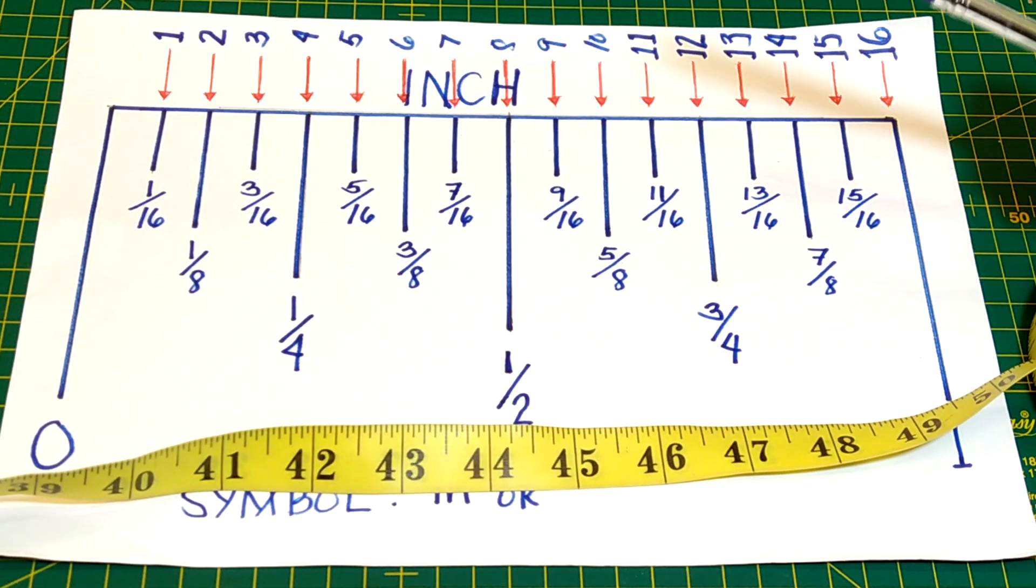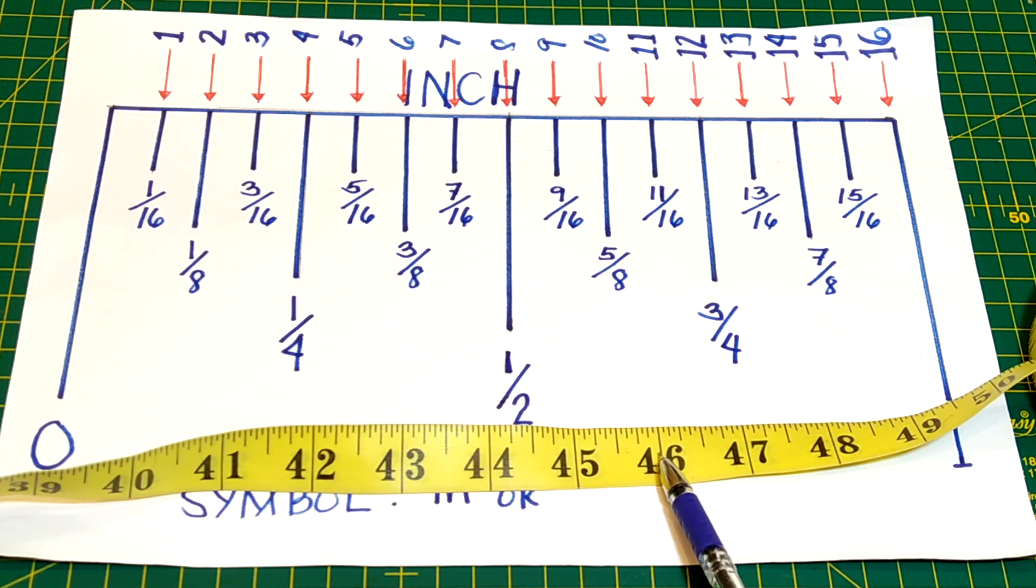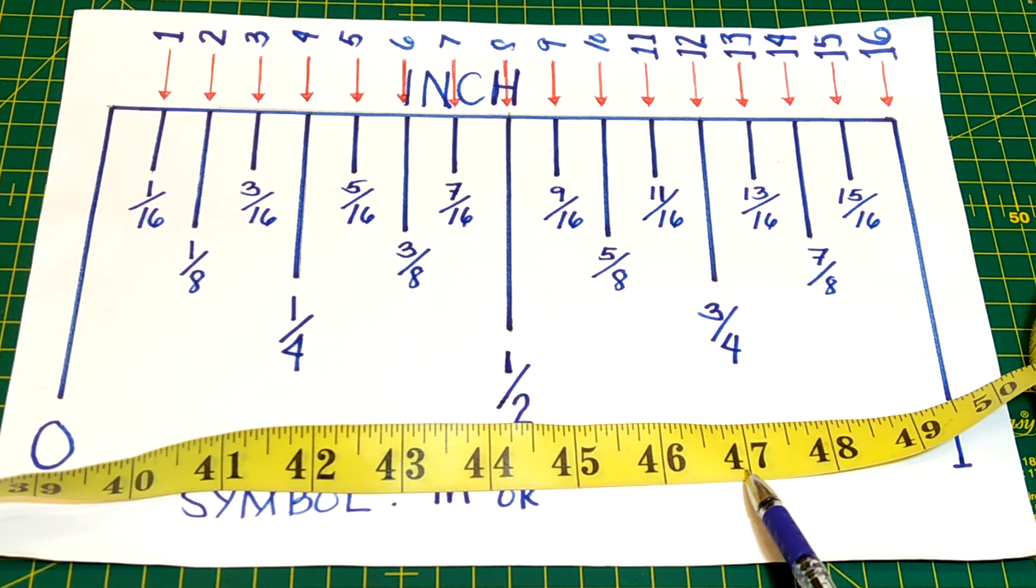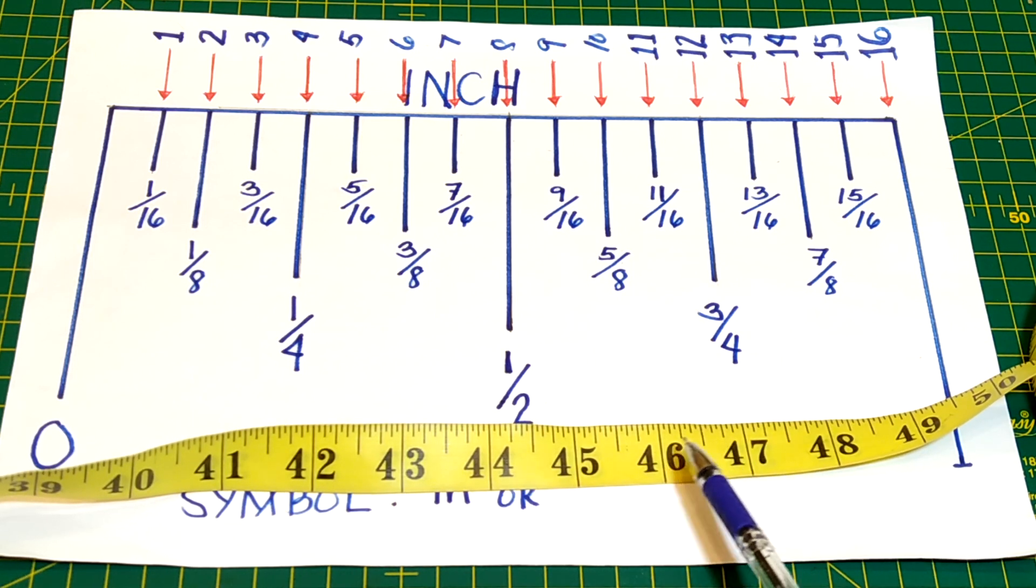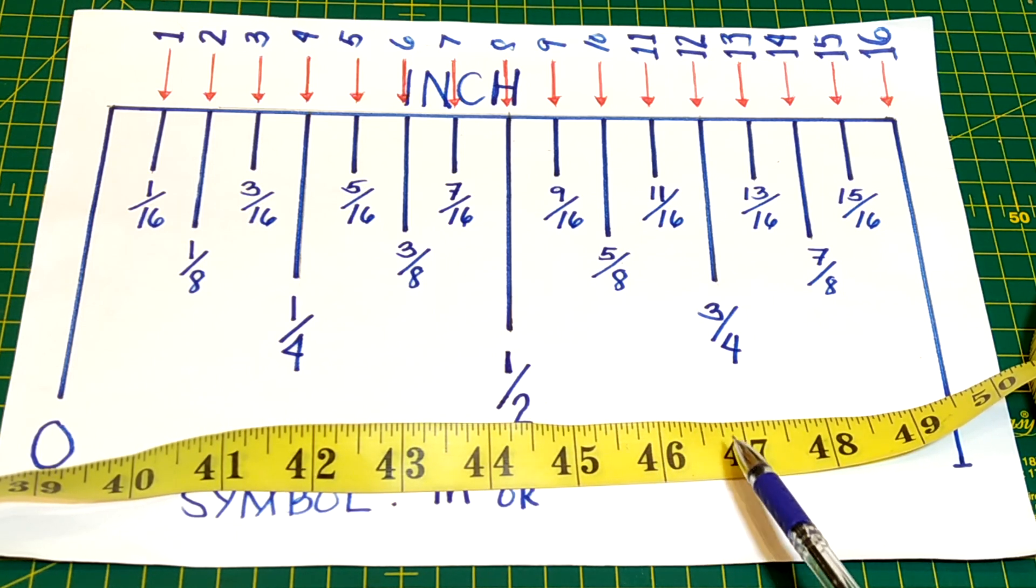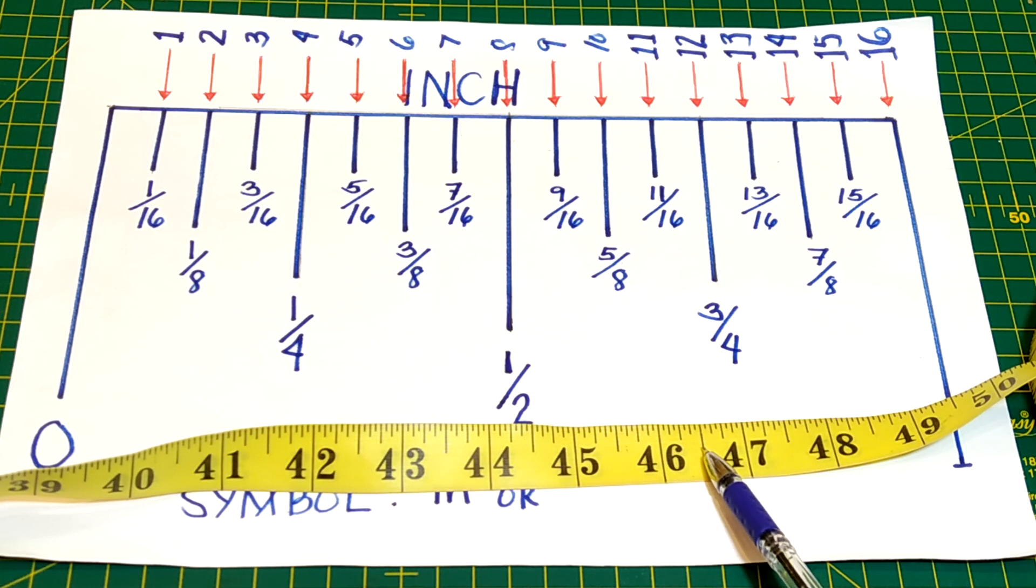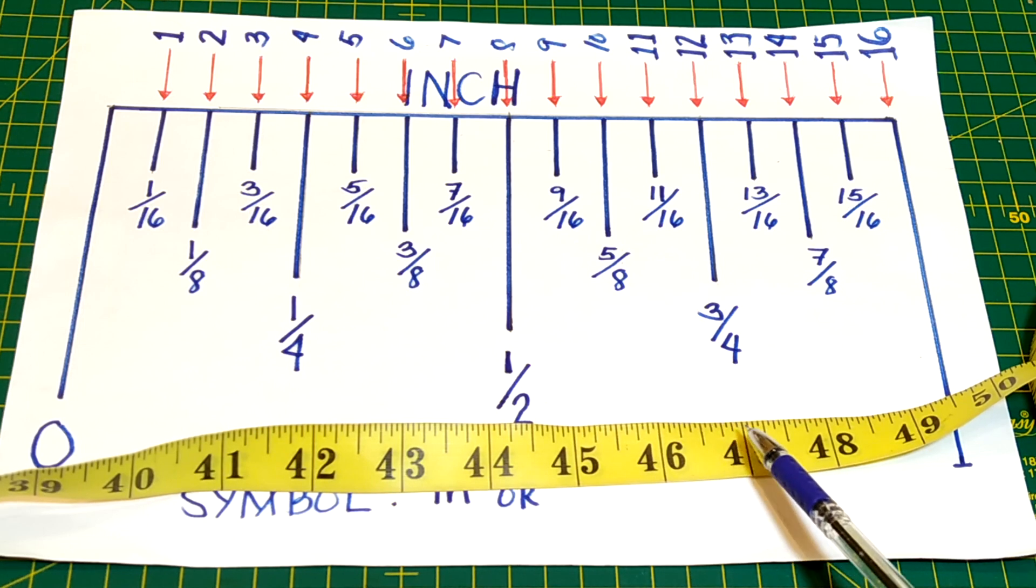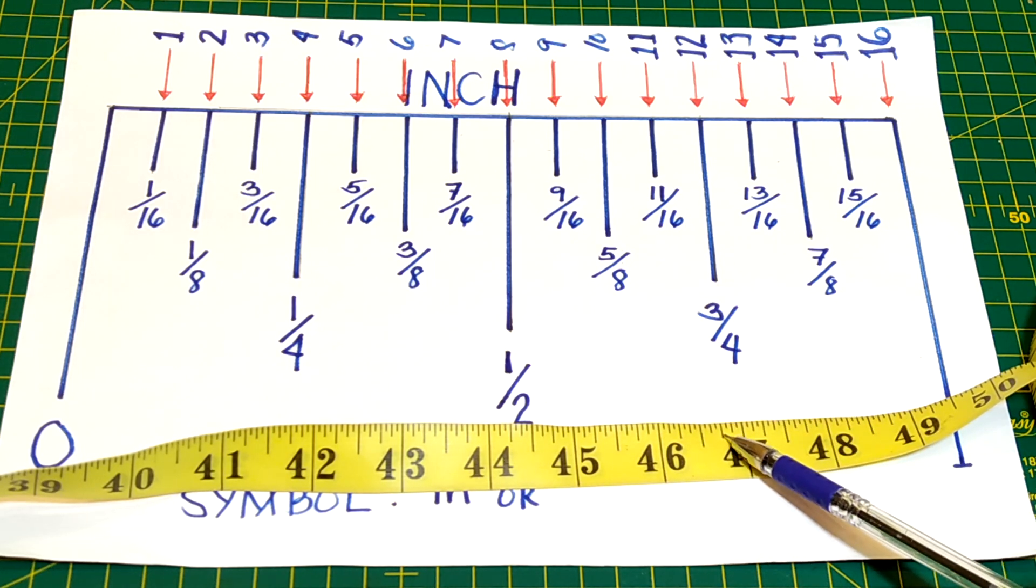From the tape measure, you will see, for example, this is an inch from this long line to this one. This is one inch from here to here, and the half of it is from this middle line, the second longest line. This one, this is half inch.